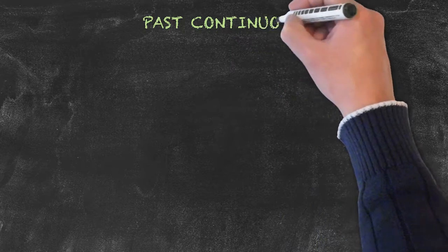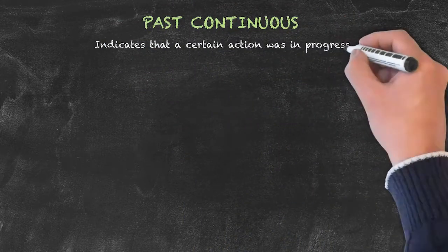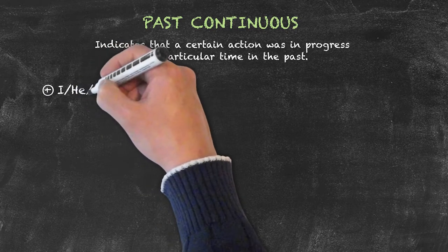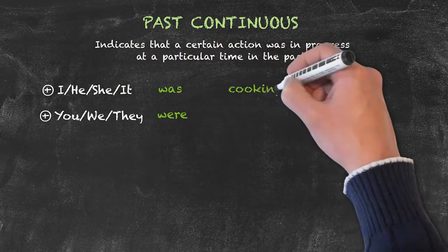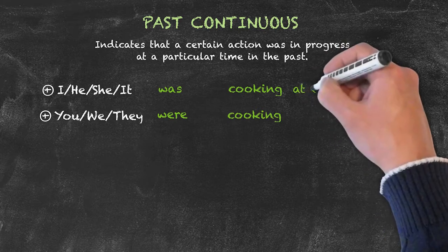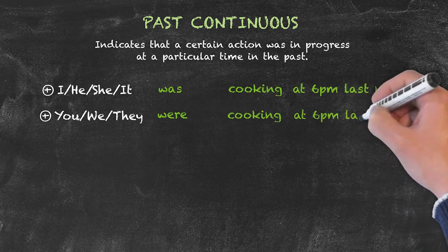Now let's have a look at the past continuous tense. This tense is used to indicate that a certain action was in progress at a particular time in the past. We form the positive form by using our subjects, the auxiliary verb 'to be', plus the verb plus -ing, also known as the present participle. So it results in sentences such as: he was cooking last night, or we were cooking last night.